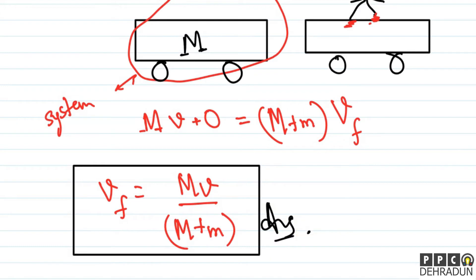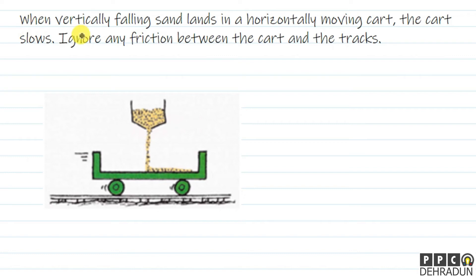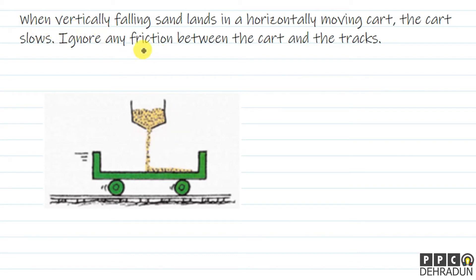A very similar and common example: when vertically falling sand lands on a horizontally moving cart, the cart slows down. This is a popular example connected to the previous problem. As more and more sand falls, the cart becomes heavier and heavier, so just as in the previous problem, momentum conservation tells us the velocity decreases.